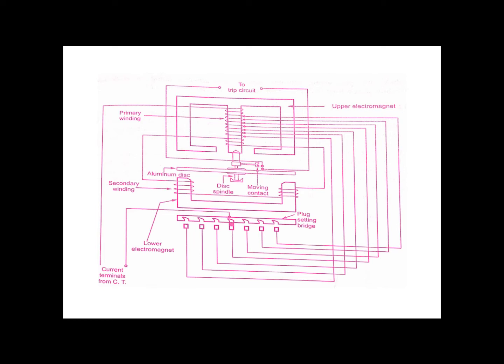There are usually seven sections of tapping to give an over current range from 50 percent to 200 percent in steps of 25 percent. These values are percentages of the current rating of the relay. For example, a relay with a current rating of 10 amperes can be connected to a CT with a secondary current rating of 10 amperes.